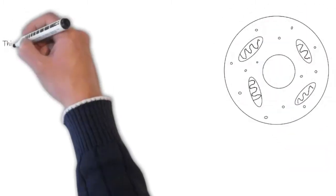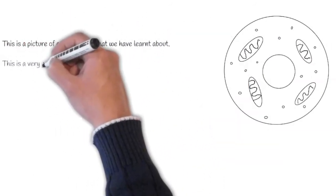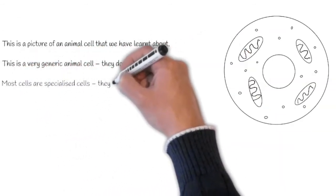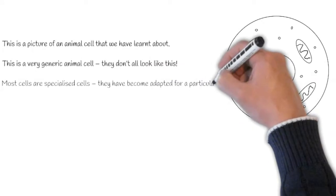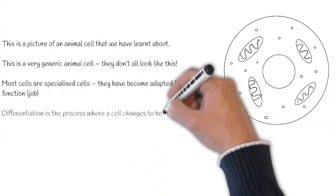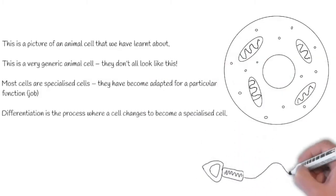Here is a picture of an animal cell that we've learnt about in past videos. It is a very generic animal cell. They don't all look like this. Most cells are specialised, which means they have become adapted for a particular function. Differentiation is the process where a cell changes to become a specialised cell.